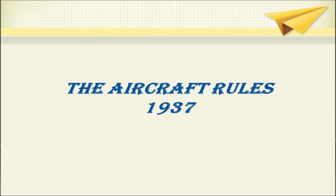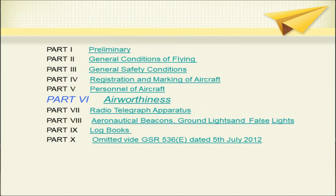The aircraft rules 1937 are divided into various parts. Part 1 is regarding preliminary; part 2 regarding general conditions of flying; part 3 general safety conditions; part 4 registration and marking of aircraft; part 5 personnel of aircraft; part 6 is for airworthiness. We are mainly concerned with the airworthiness of aircraft since this is a course for aircraft maintenance, and we will be seeing this airworthiness part in detail. Part 7 is radio telegraph apparatus; part 8 is aeronautical beacons, ground lights and false lights; part 9 log books.